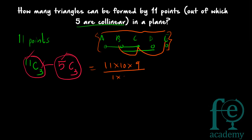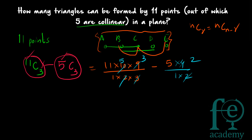Calculating: 11C3 = (11 × 10 × 9) / (1 × 2 × 3). For 5C3, using nCr = nC(n−r), 5C3 = 5C2 = (5 × 4) / (1 × 2) = 10, which is easier to compute. So 11C3 = 11 × 5 × 3 = 165. Therefore 165 − 10 = 155. So 155 triangles can be formed. If the collinear condition were not given, the answer would simply be 11C3 = 165; but since 5 points are collinear you subtract 5C3 to get 155.